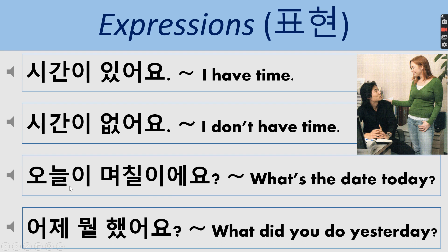Remember class, this consonant that goes after the vowel is called the batchim. When we pronounce cases like this — where a syllable has a batchim and the next syllable begins with the ieung, which is silent — we carry over the batchim sound to the next syllable. This same principle is applied here as well, so we carry over.